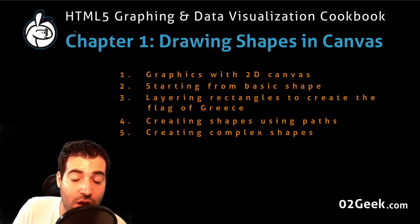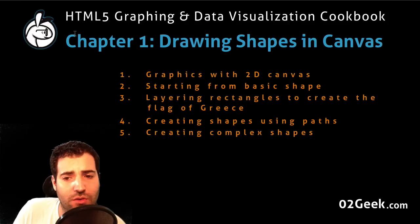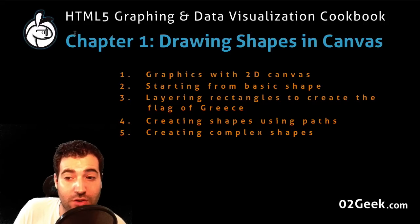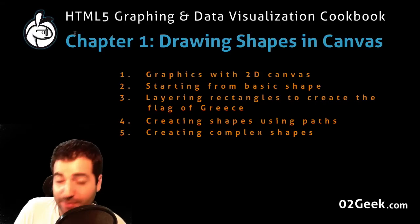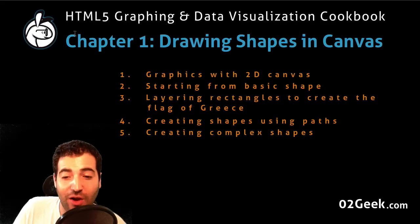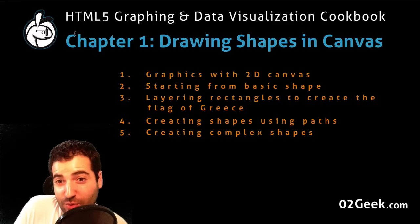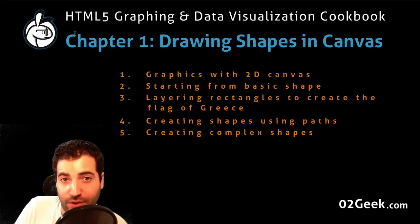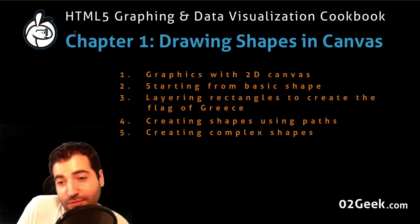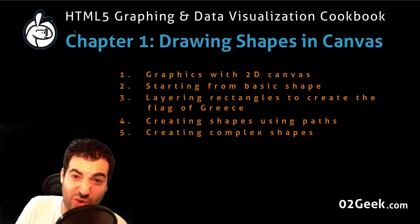If you don't have the source code already, you can go to our website at zerotogeeky.com in our book section — just find the book HTML Graphing and Data Visualization Cookbook or search for it, and you'll be able to download all the source files completely free. I personally do hope that you buy the book, join our website, or both, or just subscribe — it just makes me happy, and I hope it makes you happy too.